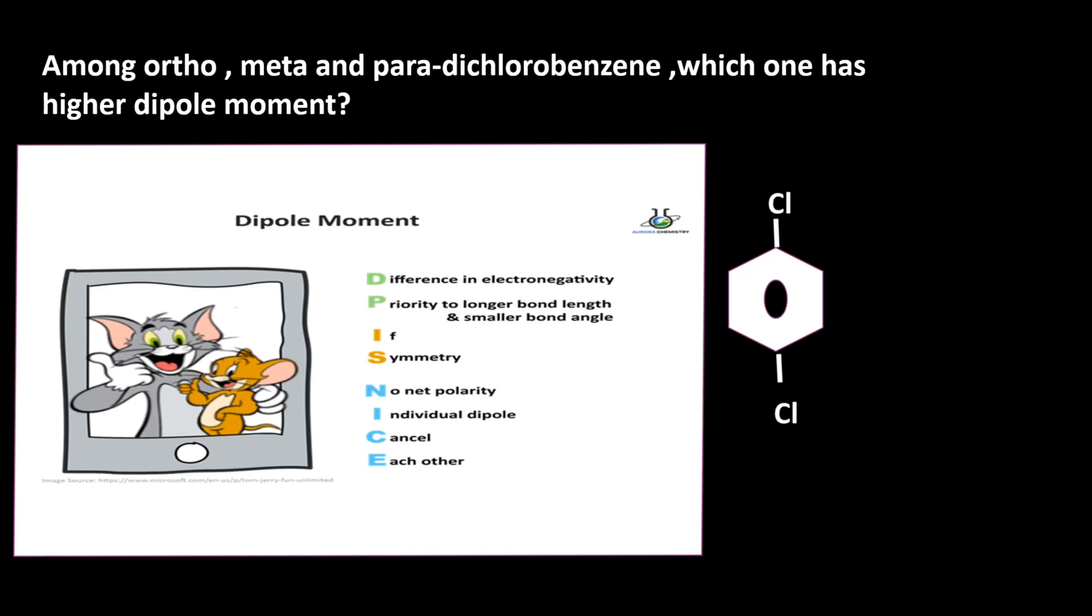At the same time, the bond angle is also 180 degrees, which makes that compound symmetric. So that is why μ, that is dipole moment, is equal to zero. So now we go to compare ortho and meta dichlorobenzene.